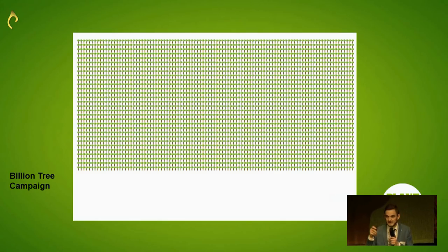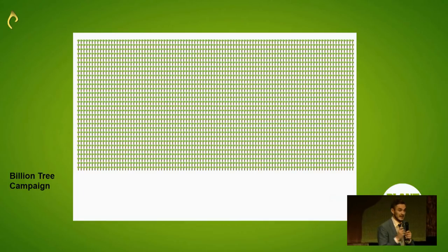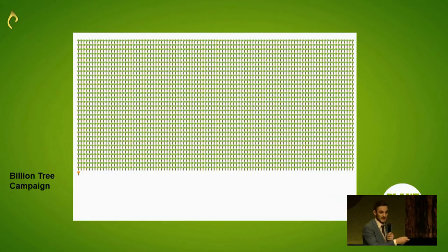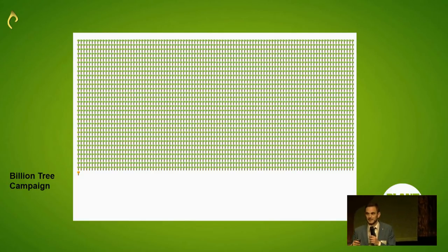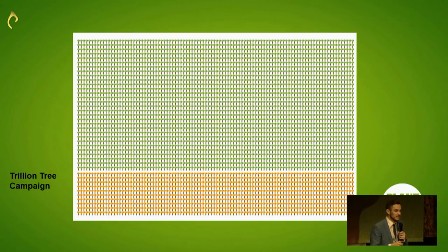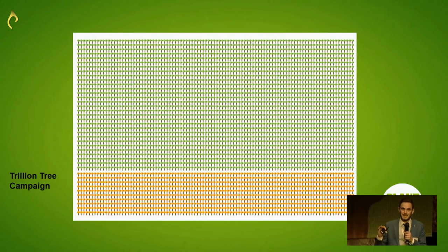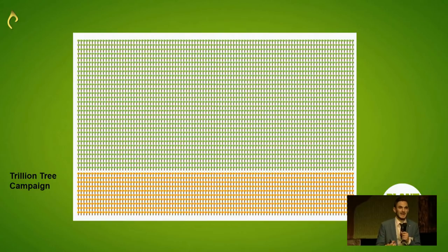This puts the Billion Tree Campaign into context. If you imagine each of these little trees representing a billion trees in the world, the Billion Tree Campaign was going to be great, but it was going to be just this contribution — and that's not the magnitude that Felix and the children are aiming for. So the move to the Trillion Tree Campaign is really going to have the magnitude of impact we're hoping for to affect the climate at a global scale.